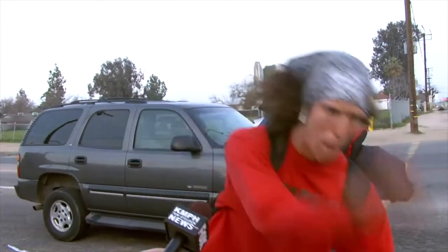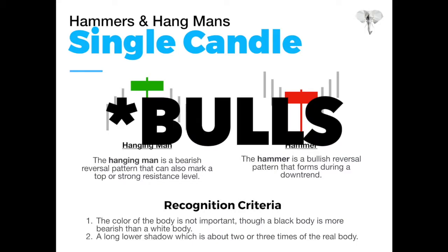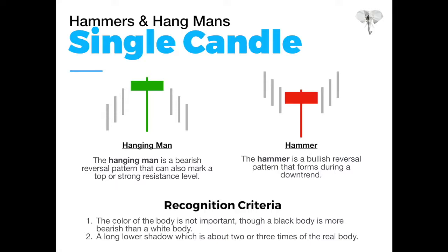A hammer is a bullish reversal pattern that's formed during a downward trend. Price action is going downwards in a bearish trend. The shadow shows bears were pulling price down to its lowest point, however the bulls came in ready to assert dominance — whether because it's hitting a significant zone, a Fibonacci zone, or some news kicked in. This is typically followed by a reversal, especially if it converges with resistance or support zones.